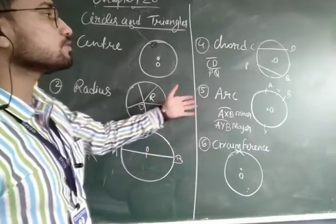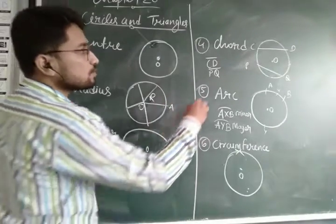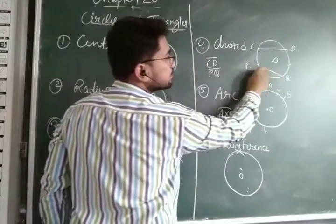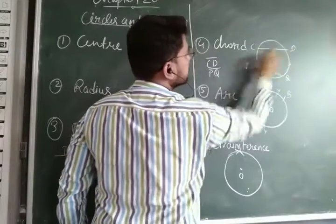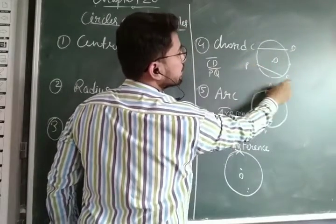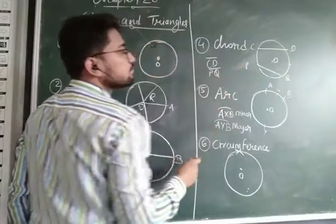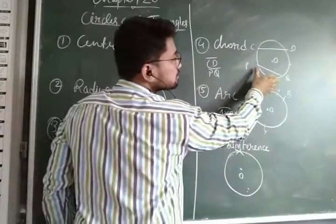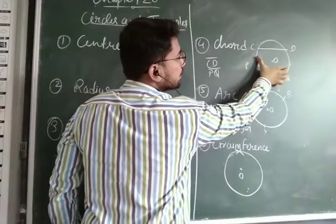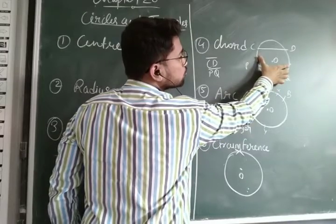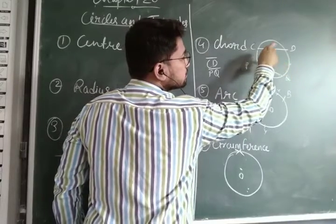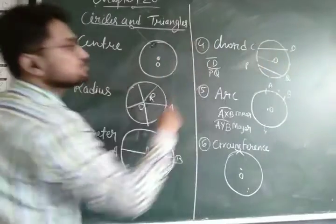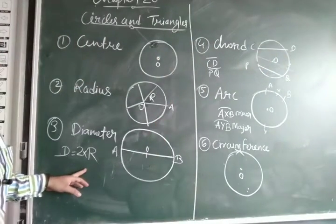Now what is chord? If you draw a line segment anywhere in the circle — like CD or like EQ — then this is known as a chord. Now if you stretch this chord so that it passes through the centre, then this is the maximum length of the chord, and this maximum length of the chord is known as the diameter.